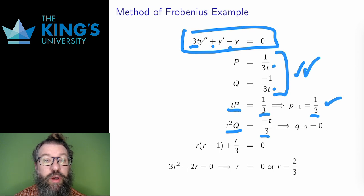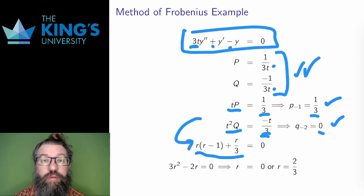And the limit of t² q at t equals 0 is the coefficient q₋₂, which here is 0. And knowing these two coefficients, I just write down the indicial quadratic from the formula I gave in the previous video. This particular quadratic has roots r equals 0 and r equals 2/3.